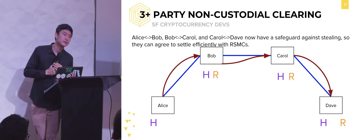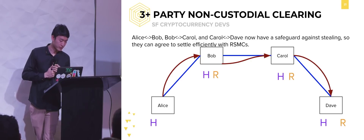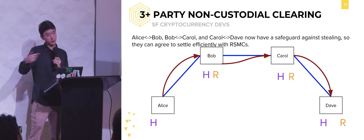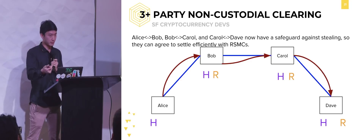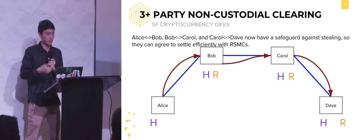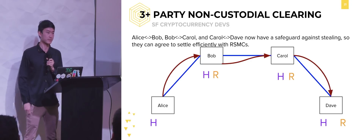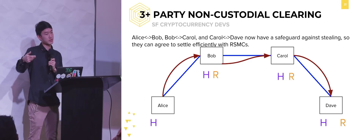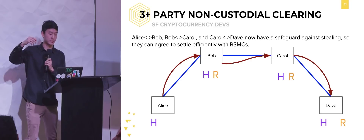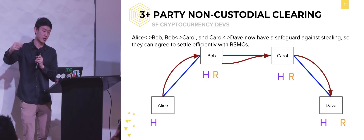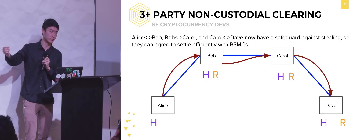Q: What happens if Bob goes down after Carol sends the money to Dave? Then Carol will pull her funds from Bob by publishing an on-chain transaction. Since Bob is not online, he won't be able to pull funds from Alice and he's going to lose this payment. Q: Carol has to wait three days? Carol has to publish that transaction within two days. The contract says Alice will pay Bob if he knows R within three days. Bob makes the same promise to Carol but with a two-day timeout.